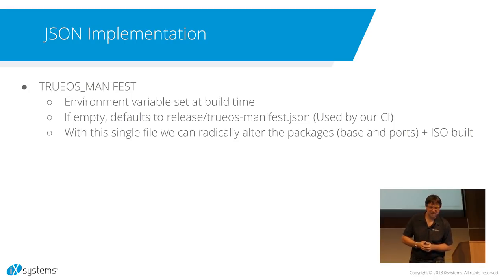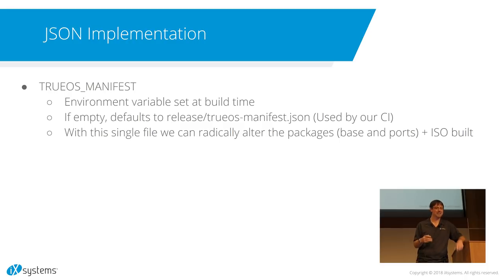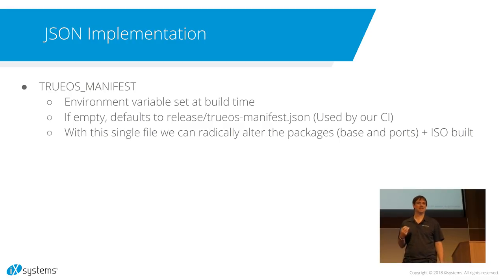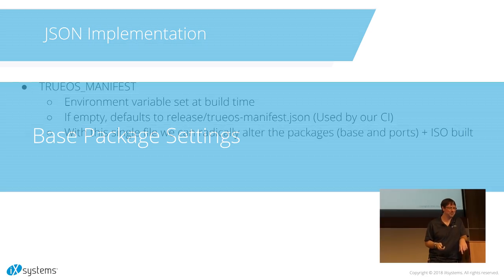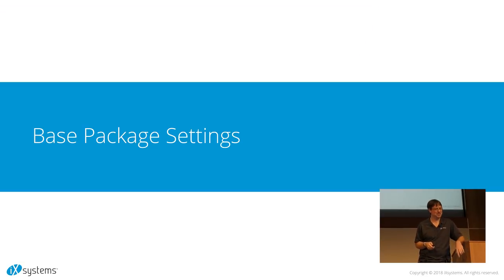What we've done is we've added an environment variable when you run your traditional build world called TrueOS Manifest. You set this at build time. If it's not set, there's a default one we ship in TrueOS — it's under release, and there's a TrueOS-Manifest.json that includes a default setup used by our continuous integration, our Jenkins tests. With this single file, we can radically alter what gets built — the packages and the ISO.